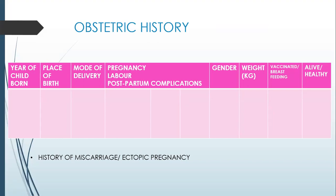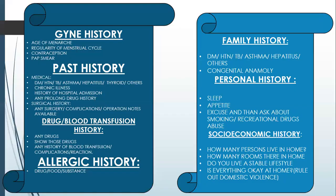Please do not forget to ask about the history of miscarriages, abortion, and ectopic pregnancy in the Ops history. In the gynaecological history, quickly go through the age of menarche, regularity of the menstrual cycle, contraception methods used so far, the pap smear test, and the date of the last pap smear test.